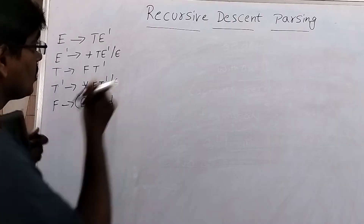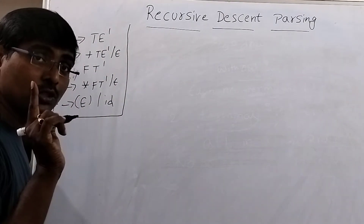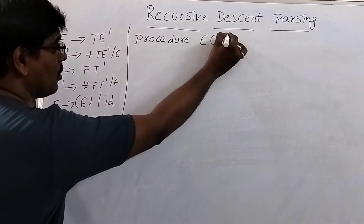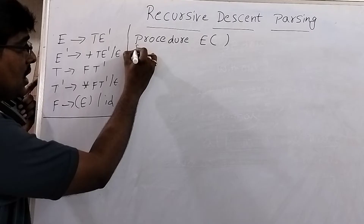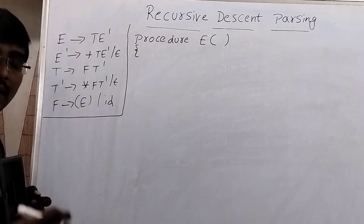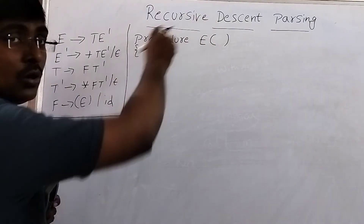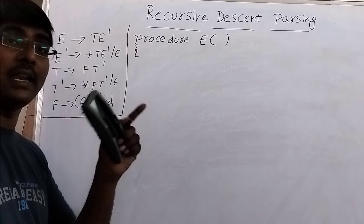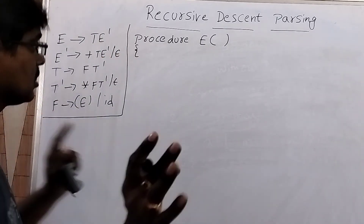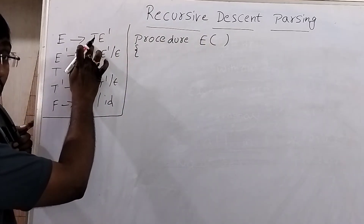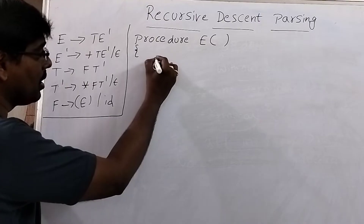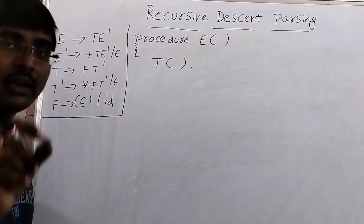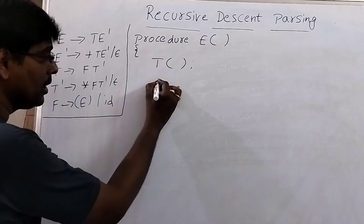We will construct the recursive descent parser for this example grammar. The procedure starts from the start symbol. We write: procedure E(). If it is a non-terminal, again call the procedure — that is the reason it is called recursive. Within a function we are calling one more function; that function in turn calls this function, either direct or indirect recursion. In procedure E(), the first element is a non-terminal, so we call T(), and then call E'().